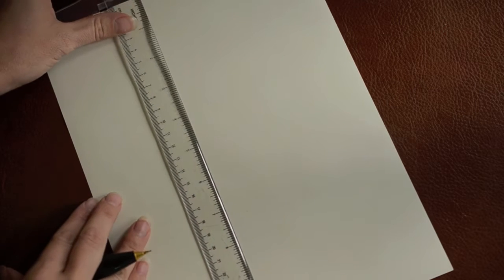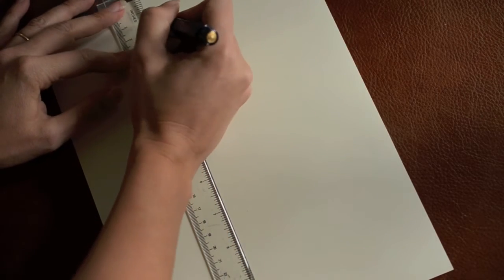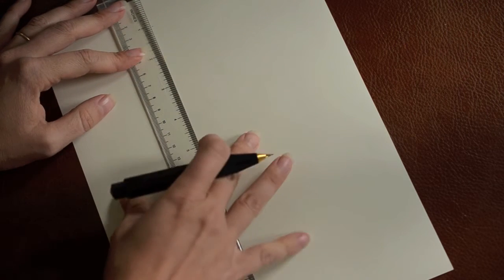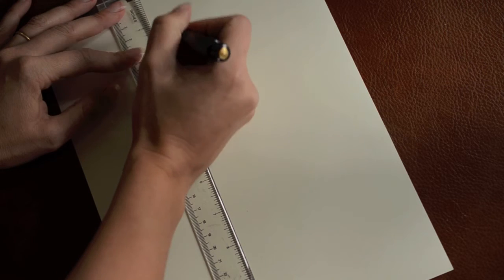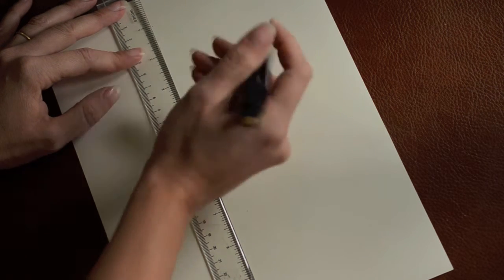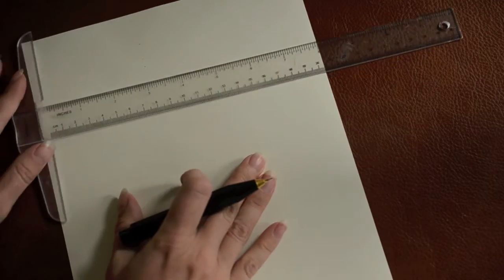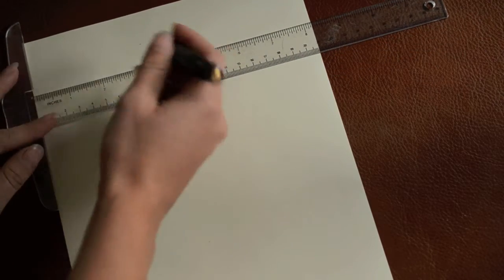So to start, you want to figure out how high your lowercase letters will be. For this demonstration I'm gonna make them one-fourth. So I'm gonna mark an inch down from the top because that's where I want to start my letters, and then tick off a half an inch and a fourth an inch.